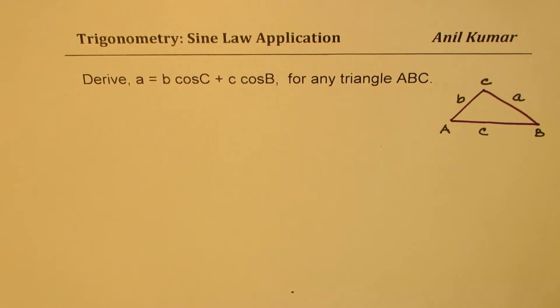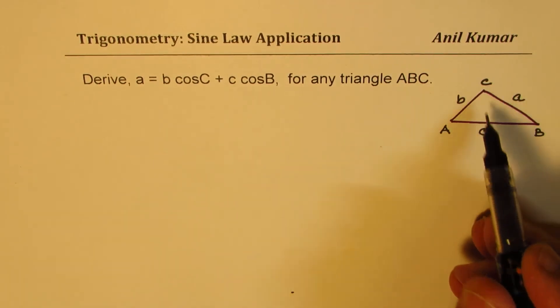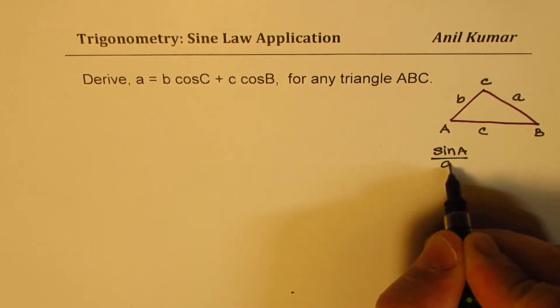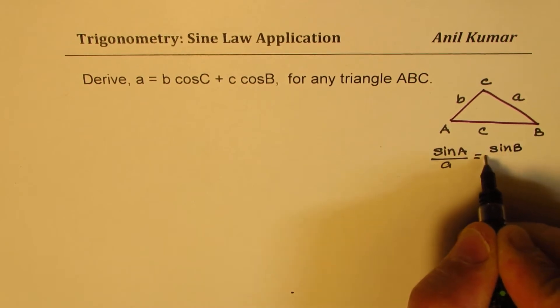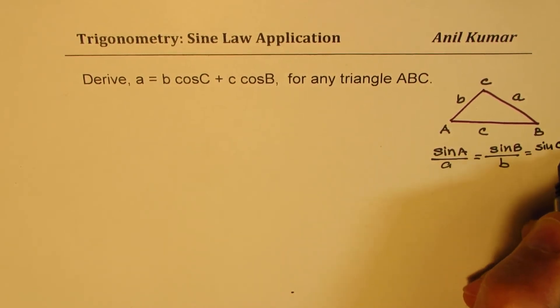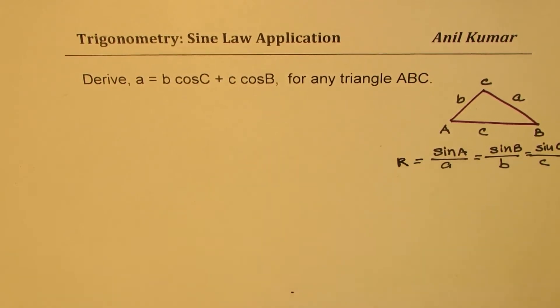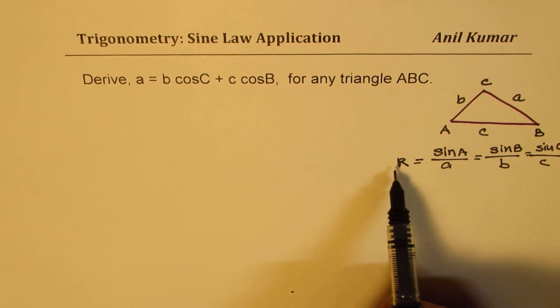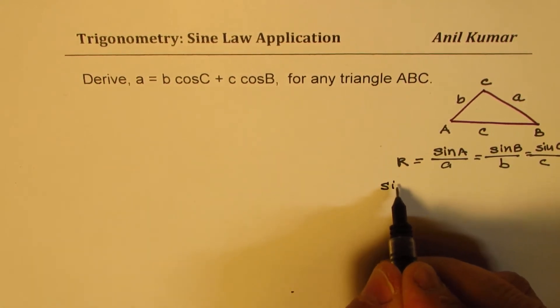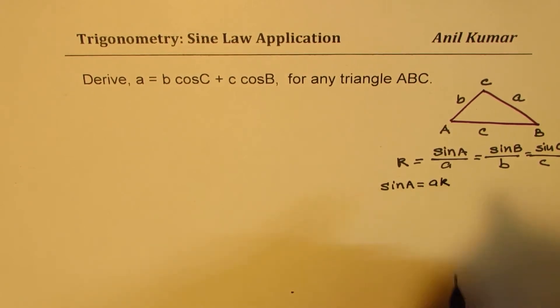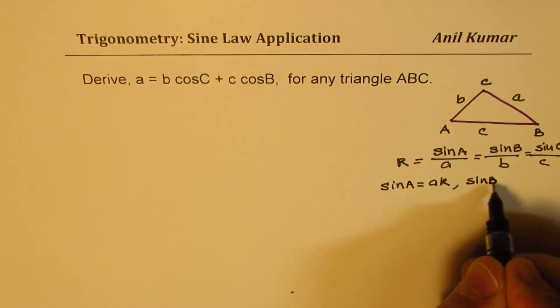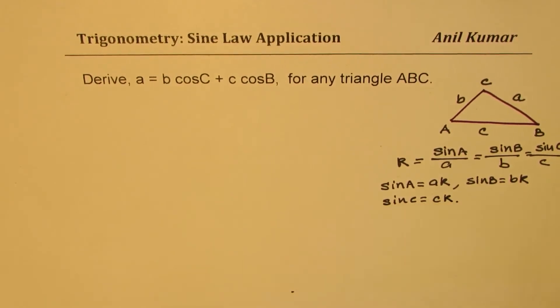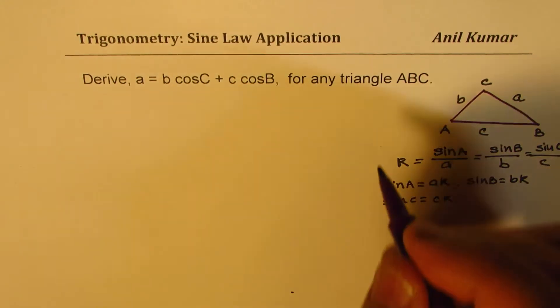Now, how do we derive it? Well, we know sine law relates the angles with the sides. So we could always write in any triangle sine of A over a equals to sine of B over b and equals to sine of C over c. We can take this as a constant K. In that case, individually, we could write sine A as a times a constant. So sine A equals a times constant. Similarly, sine B equals b times constant, and sine C equals c times a constant. So these relations we get from the sine law.